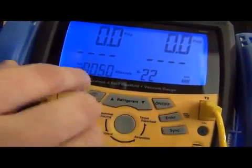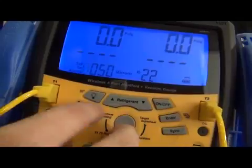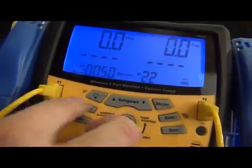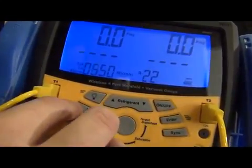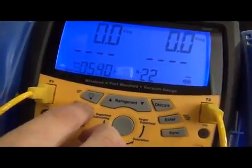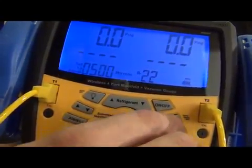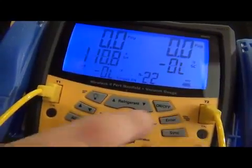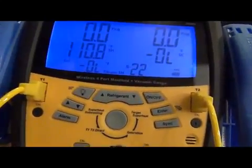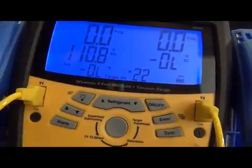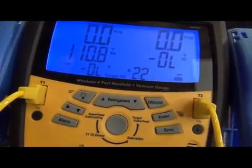Now your low microns, you might want to set it for something like 500. And now what it'll do is when I start pulling a vacuum, you'll see the first alarm go off when you hit 500 microns. That's the low level.